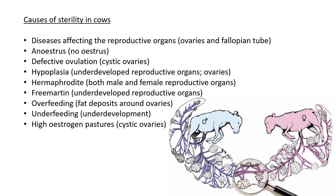Defective ovulation means it doesn't happen or when it does something goes wrong — specifically with the ovaries. The Graafian follicle is mature but for some reason it is not rupturing, so the egg cell is not released, and this can cause a cyst to form. The egg cell in the follicle becomes thick and cyst-like, almost like a tumor, which can cause harm to the cow. There are no egg cells being released, and the cyst can cause inflammation, making her sterile either temporarily or permanently.